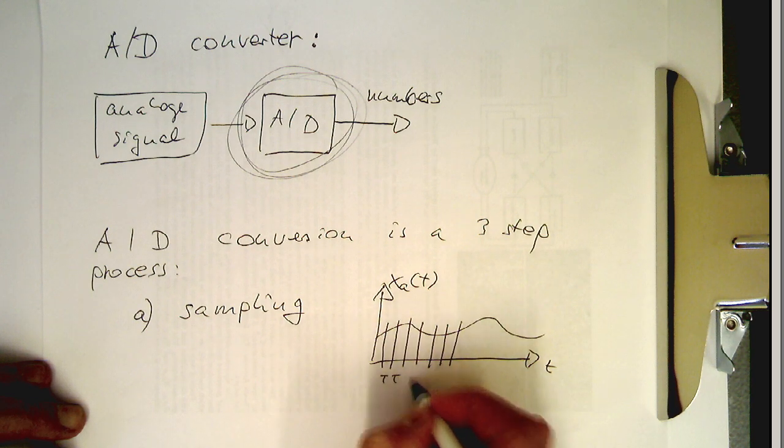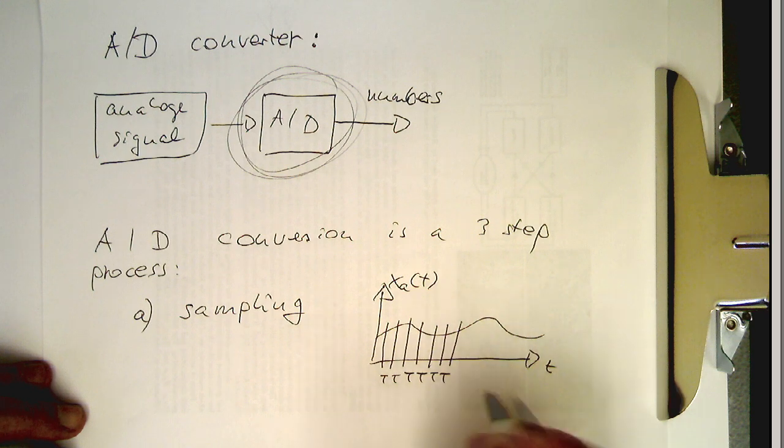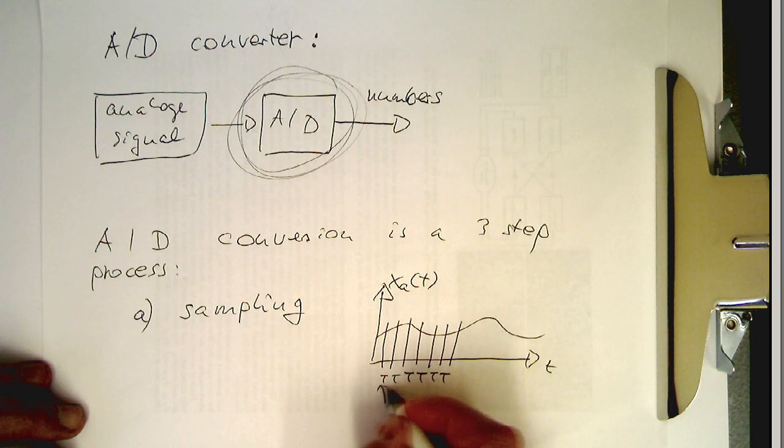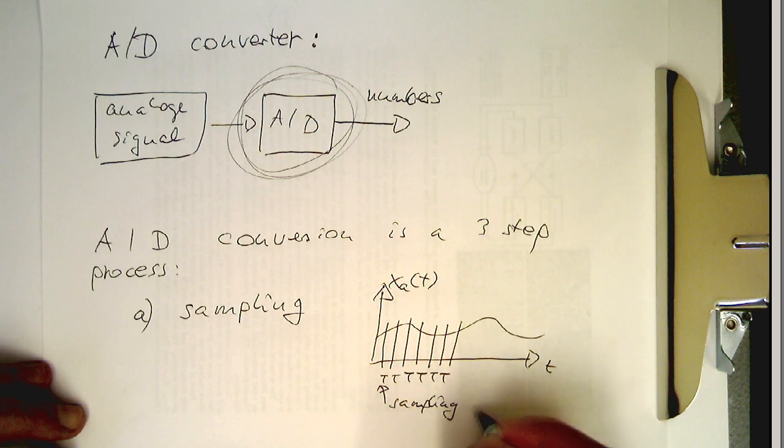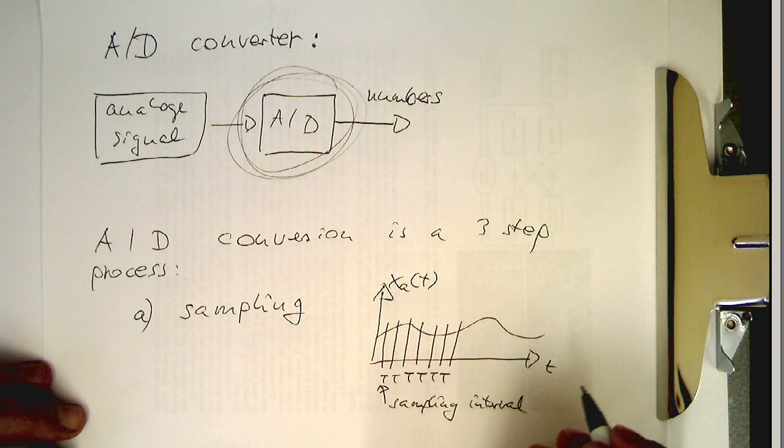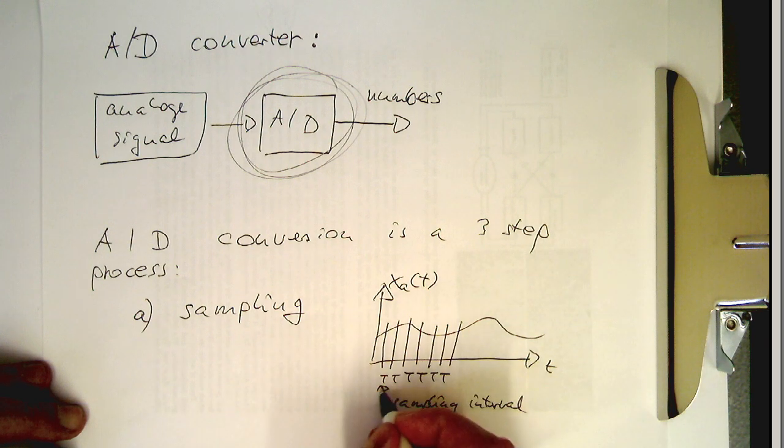And the distance between these samples is fixed, and so the time between these samples is always T. So that's sampling, that's the so-called sampling interval. So the sampling interval defines how often we are looking at the values of the signal here.